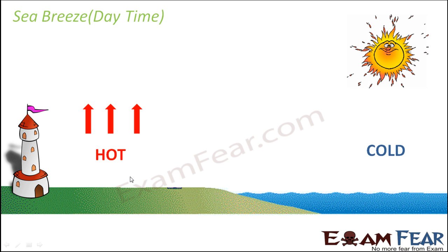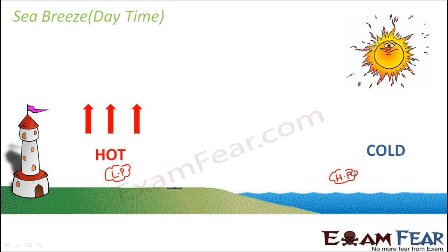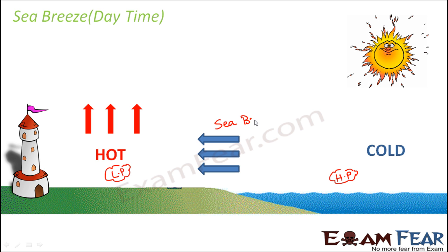As a result, a low pressure region is created over the land, while the sea region is comparatively at a higher pressure. We know that air always tends to move from high pressure towards low pressure. So the comparatively cool air from the sea will move towards the land, and this cool air is termed sea breeze. Sea breeze flows during the daytime because this entire phenomenon happens during the daytime.